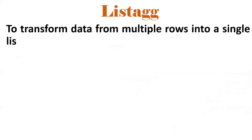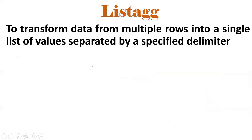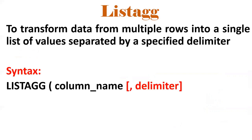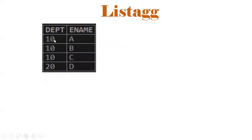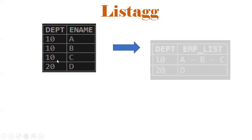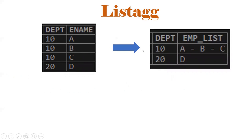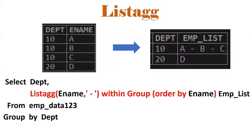Now, the LISTAGG aggregate function. It transforms multiple rows into a single row using a delimiter. The syntax is: LISTAGG(column_name, delimiter) WITHIN GROUP (ORDER BY sort_expression). For example, with a department table having employees in department 10 (A, B, C) and department 20 (one employee), I want to separate names with a hyphen. Using LISTAGG(employee_name, '-') WITHIN GROUP (ORDER BY employee) GROUP BY department achieves this. You can use hyphen, comma, or any symbol as delimiter.